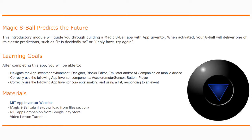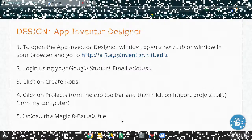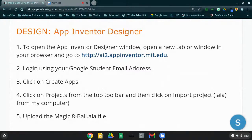Let's take a look at how we can import that AIA file into our MIT App Inventor. To begin with your Magic 8-Ball app, we're going to need to log into MIT App Inventor. We can get there by clicking on the link in your Schoology or simply typing ai2.appinventor.mit.edu into your URL.